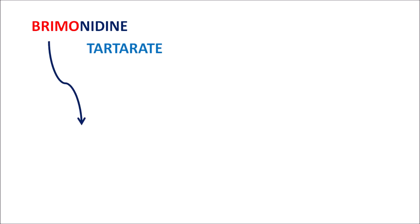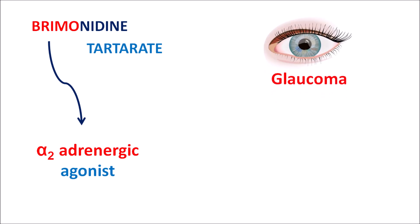Today we'll discuss brimonidine. This drug is available in the form of a salt called brimonidine tartrate, and it is one of the alpha-2 adrenergic receptor agonists. This drug can be used as eye drops in the treatment of glaucoma, where there is increased intraocular pressure resulting in the blurring of vision.